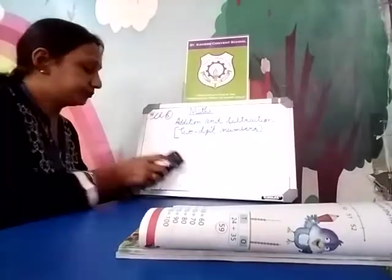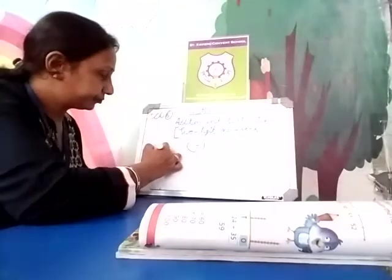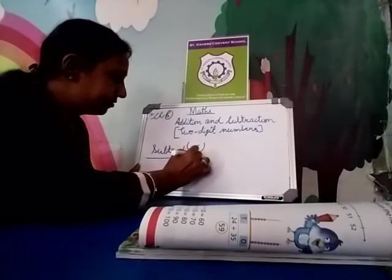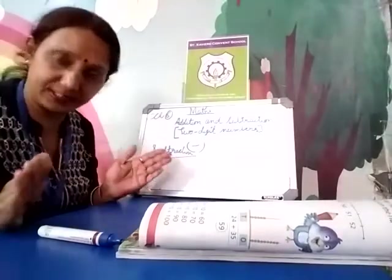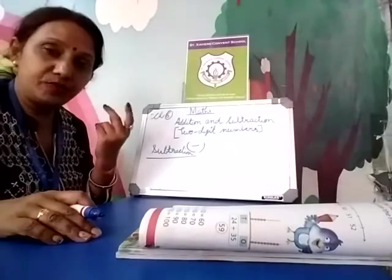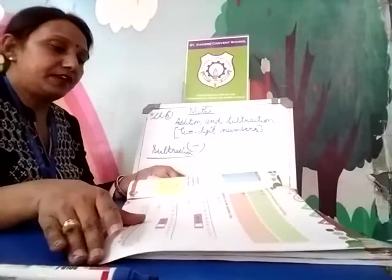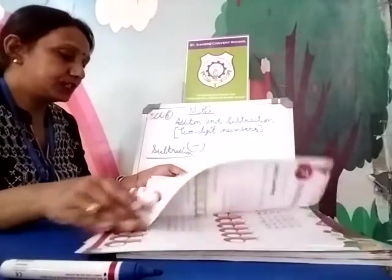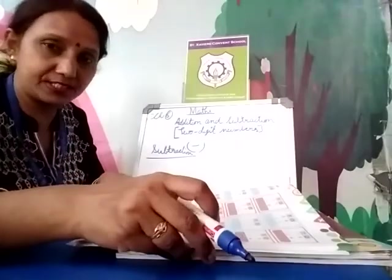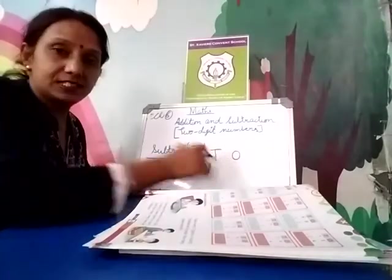Now we will study subtraction. The sign of subtraction you know it. Subtraction in two digits — what is subtraction? We subtract, we remove, we cut. So here we will do it in two digits using ones and tens. It is given on page numbers 64 and 65. I will teach you some examples and give you a worksheet to copy in your notebook.